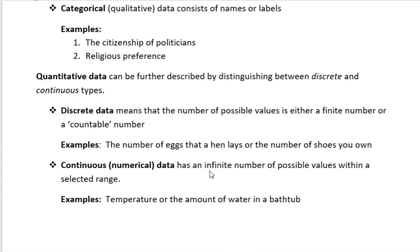Continuous numerical data has an infinite number of possible values within a selected range. Examples include temperature or the amount of water in a bathtub.